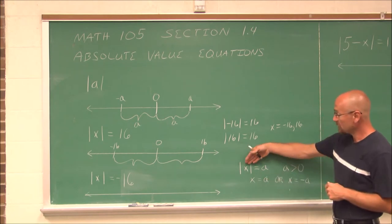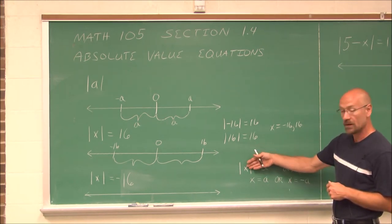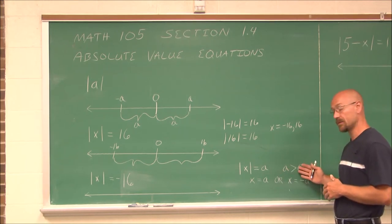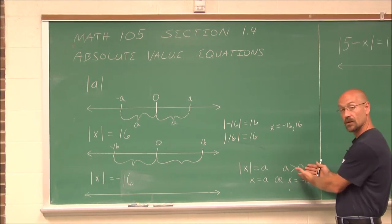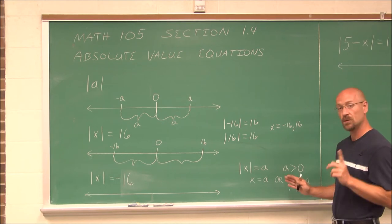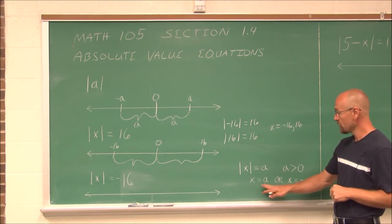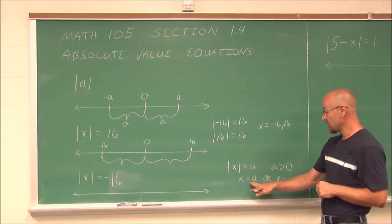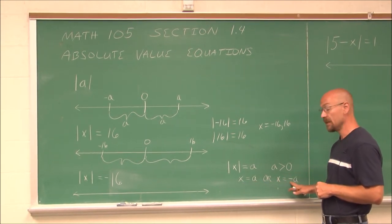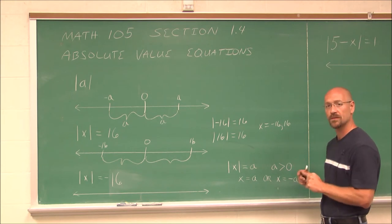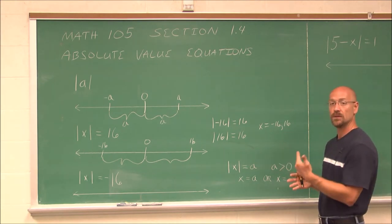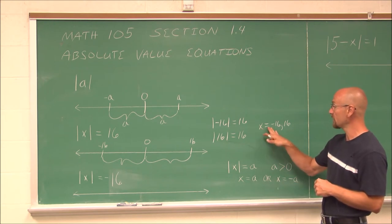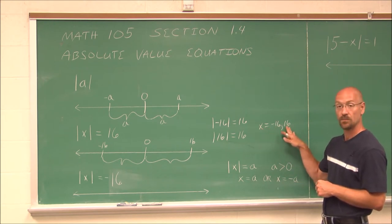So what does that mean? If we have the absolute value of a variable equal to a number, that number should be positive — greater than 0. Zero is a special case we'll discuss later. If we have the absolute value of x equals a number, then x equals that number or x equals the negative of that number — two possibilities, to the right of 0 and to the left of 0. So we have this OR statement, just like x could equal negative 16 or positive 16.